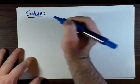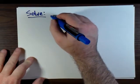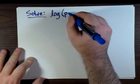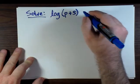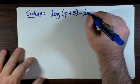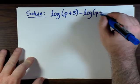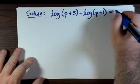So we're going to now look at our next problem. We're trying to solve log of p plus 5 minus the log of p plus 1, and we're going to make that equal to 3.